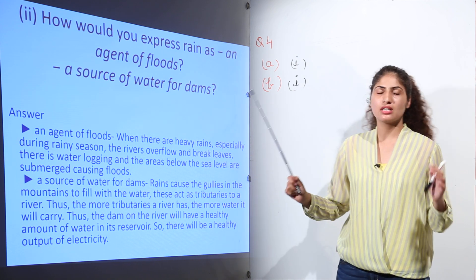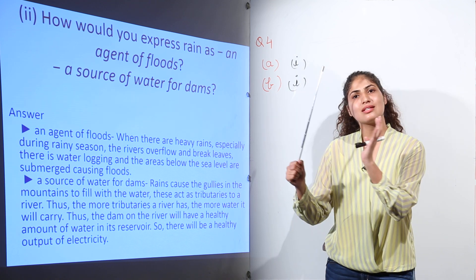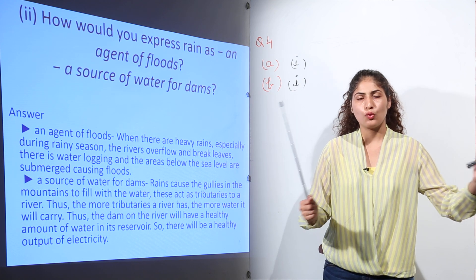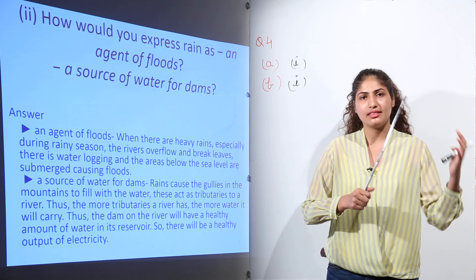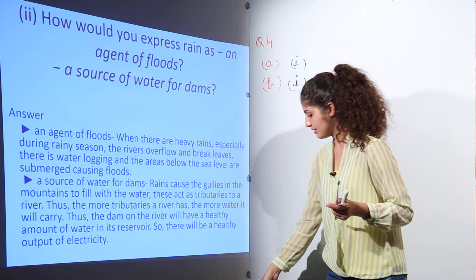Source of water for dams: dams are constructed for generation of electricity. So in order to construct the dam, what we do is we collect the rainwater and then this rainwater is used for the dams to produce electricity.